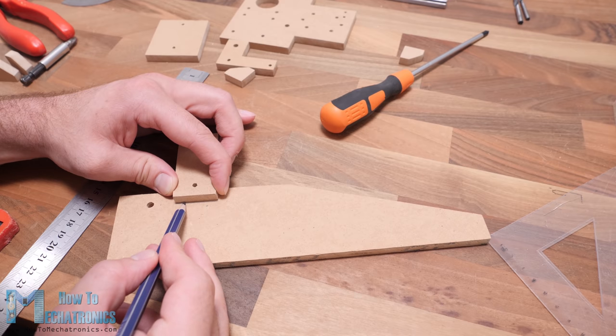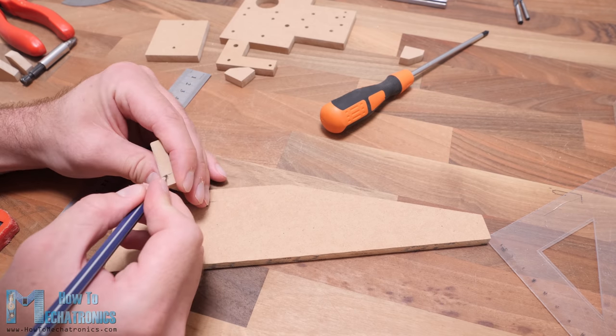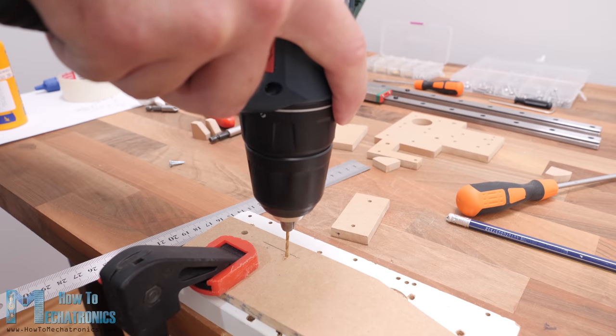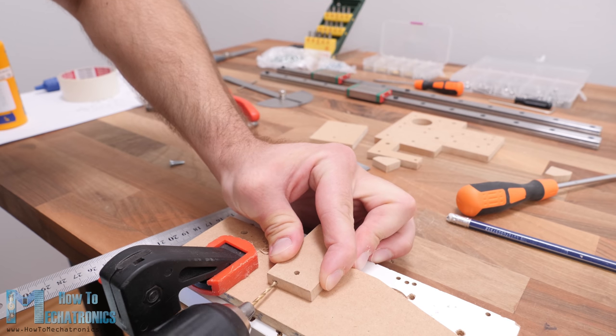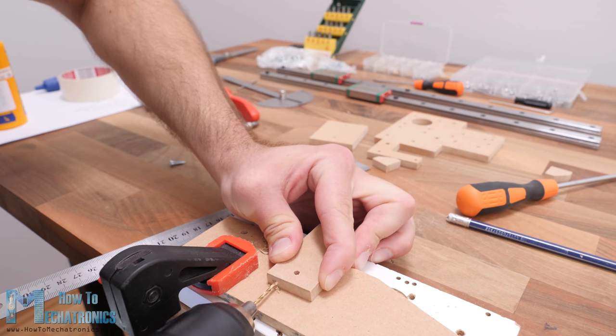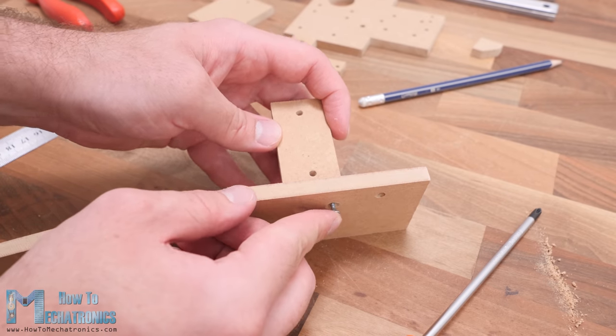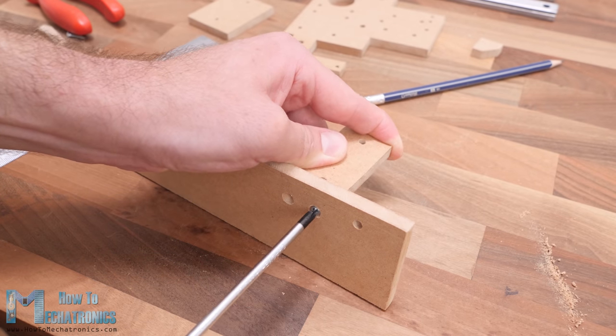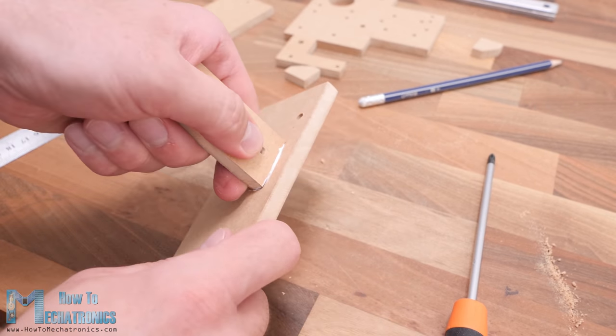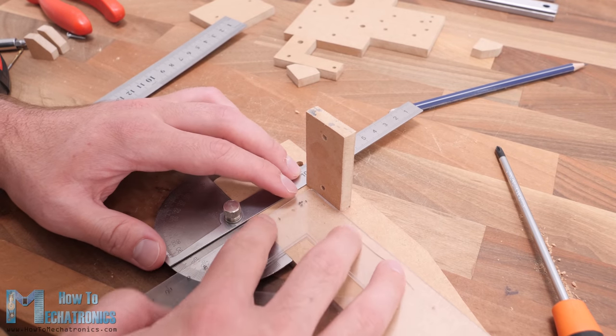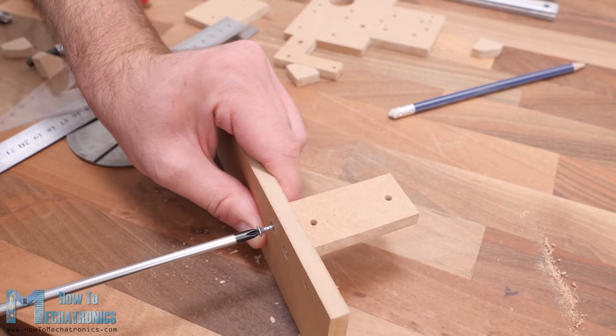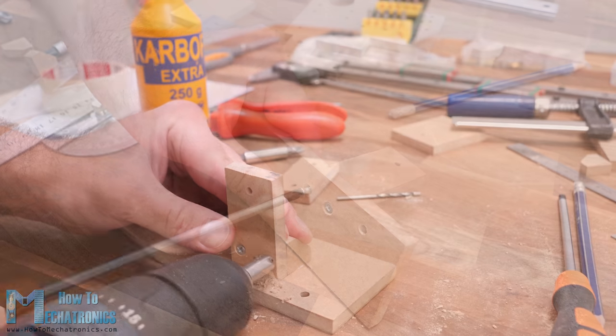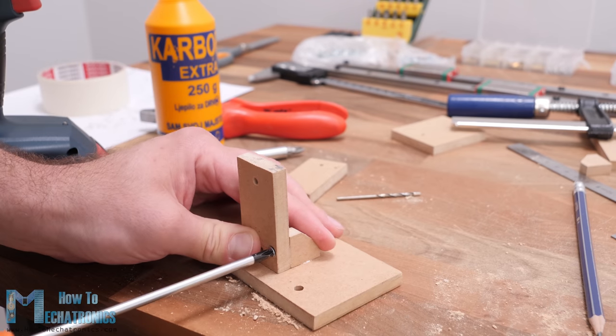Next, I continued with assembling the base of the machine, on which the X axis rail will be secured. For that purpose, I marked the position where the rail support part should be fixed, and drilled two holes on the base part and one hole on the support part. Then I secured these two parts together with the first 3 mm screw and some wood glue. With the first screw in place, I checked for squareness and then pre-drilled the second hole on the support material with a 2 mm drill. In similar way, I added two brackets for better support.